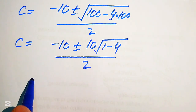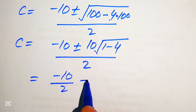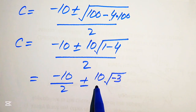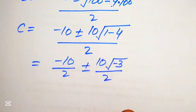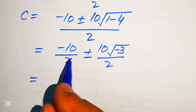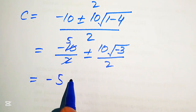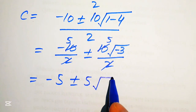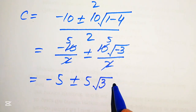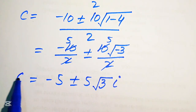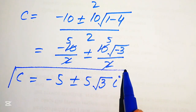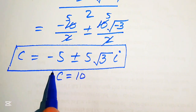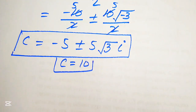Breaking the fraction, we get minus 10 over 2 plus or minus 10 times square root of negative 3, divided by 2. This simplifies to minus 5 plus or minus 5 times square root of 3 times iota, since square root of minus 1 equals iota. These are the other two complex roots from case 1, giving us three roots total from equation number 1.